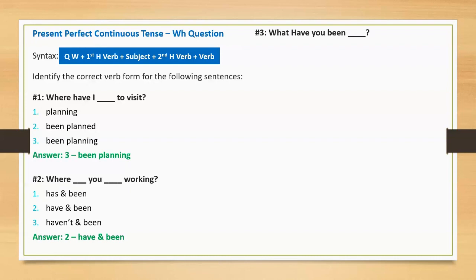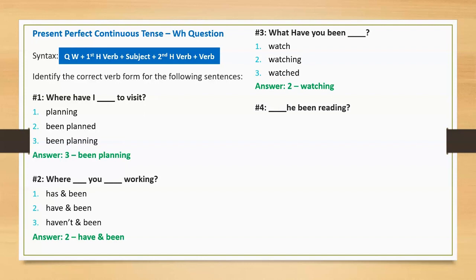Question three: 'What have you been blank?' Option one: watch. Option two: watching. Option three: watched. Correct answer: watching. Full sentence: 'What have you been watching?'